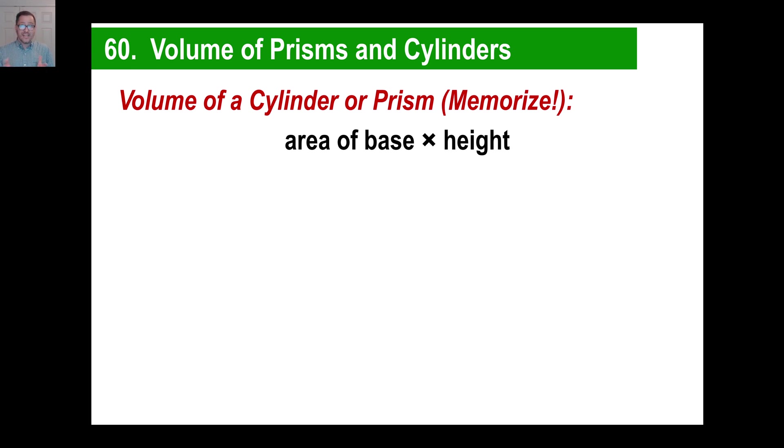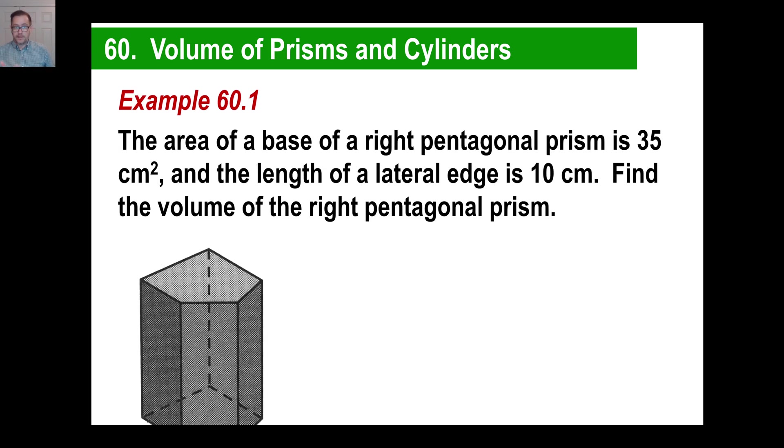Sometimes they'll tell you the area of the base if it's a weird shape. Sometimes they'll say it's a square with a side length of 4. And you'll go, okay, the area of the base is 4 times 4, 16, a rectangle. Or they'll tell you a triangle or a circle. The area of a circle is pi times the radius squared. So you'll just figure that out, multiply it by the height, you got the volume. That's what it is. Alright, so let's do one here.